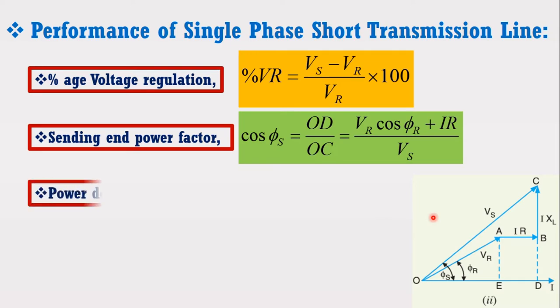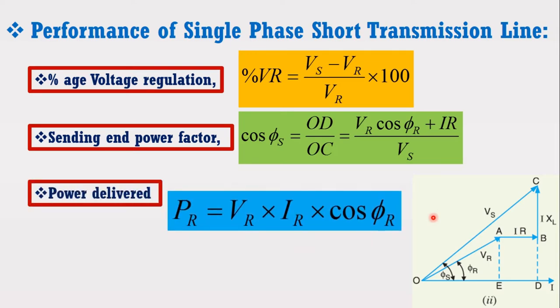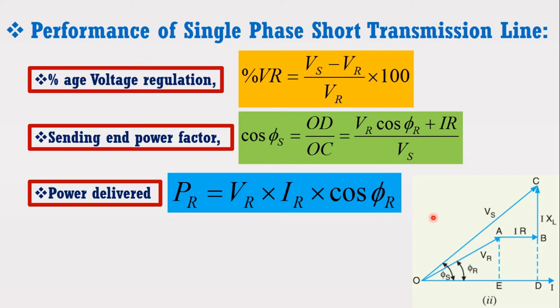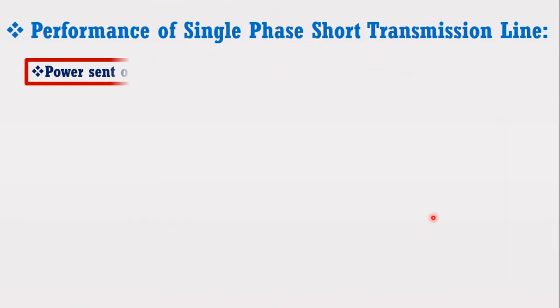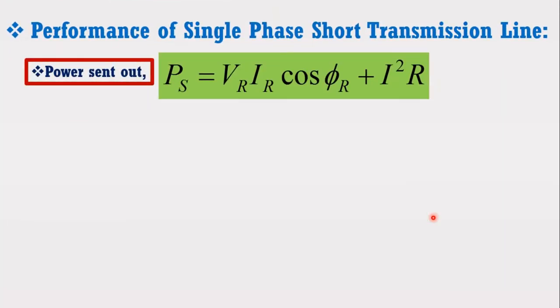Now, power delivered or received will be equal to the following expression. And the line loss are given by I square R. Therefore, power sent out will become equal to the receiving end power plus losses. Putting the expressions of receiving end power and losses, the final expression for sending end power will become as below.